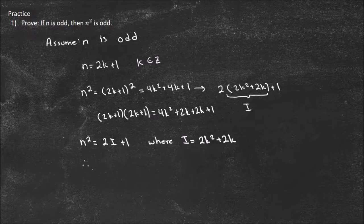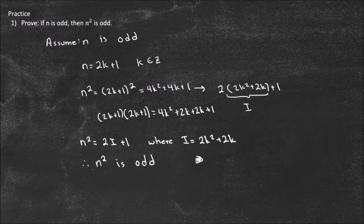Therefore n squared is odd. To end the proof I write QED — I like to draw a filled-in square. So that's the end of the proof. We went through all the steps and showed that n squared is also going to be 2 times some integer plus 1, which is the form we need to prove a number is odd.